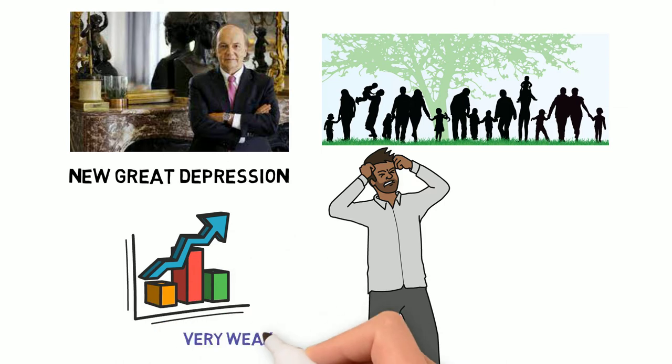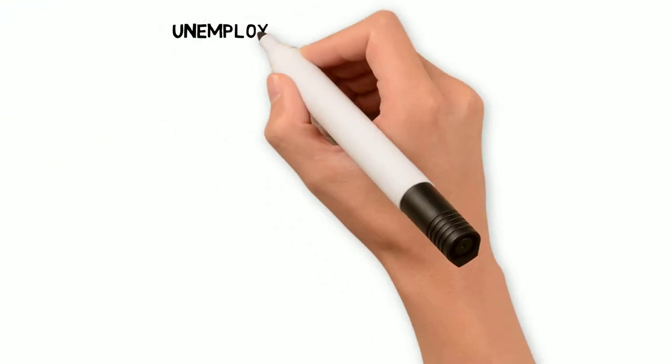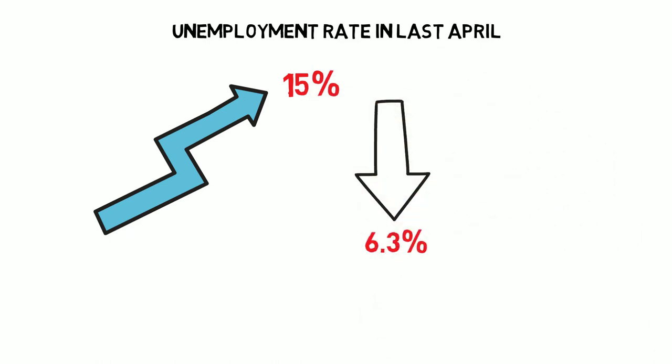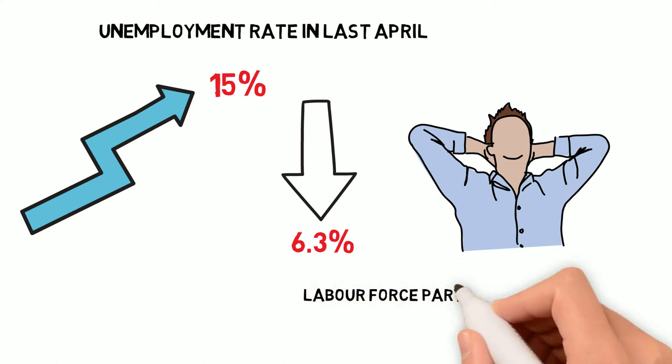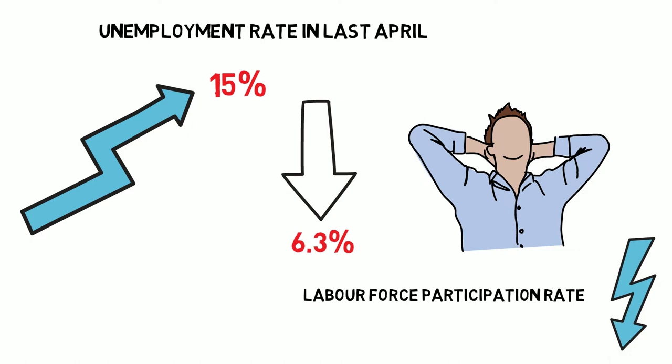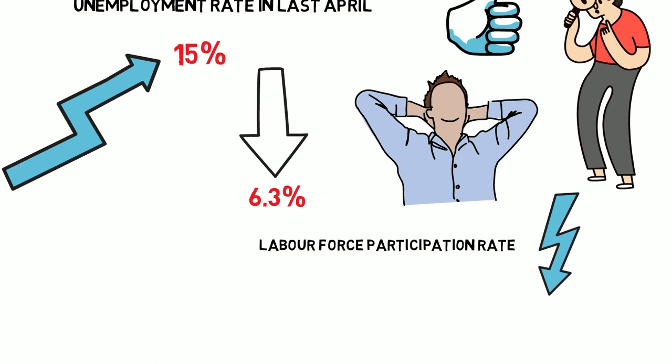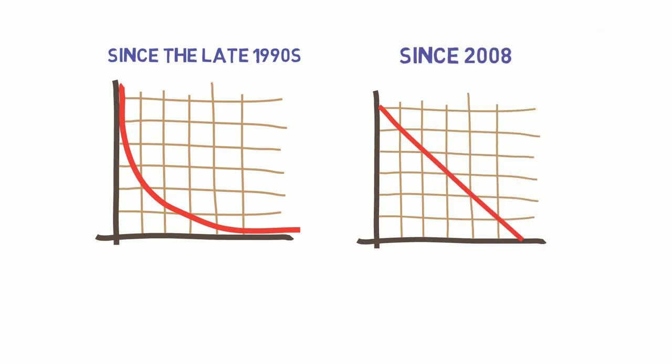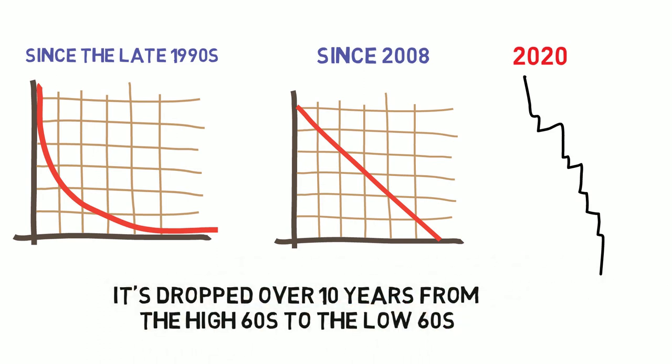Even periods of growth will be very weak growth. A lot of people think about the high unemployment rate, for example, if they think about the Great Depression. And if you look at the unemployment rate in last April, it was sky high around 15%, and then it went all down the way to around somewhere 6.3%. Of course, you can have a whole discussion about the definition of unemployment. You also have the labor force participation rate, which has been declining over time. But just purely looking at the unemployment rate, it seems like we are in a much better state now purely based on that number. The employment rate has been dropping steadily since the late 1990s, but more steadily since 2008, fell off a cliff in 2020. But it's dropped over ten years or so from the high 60s to the low 60s.